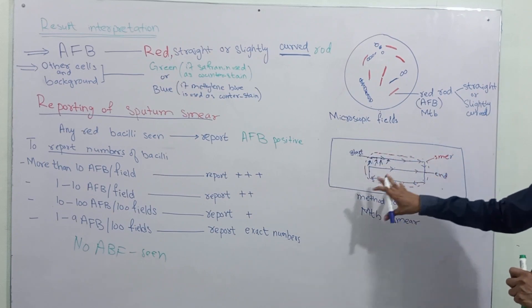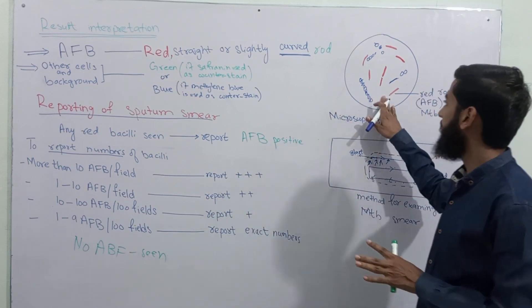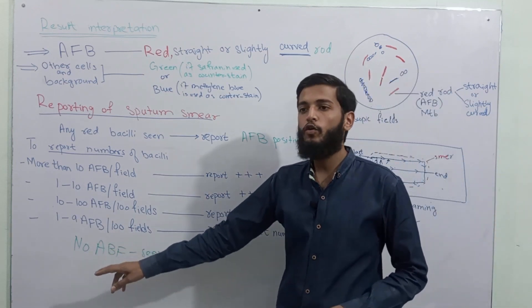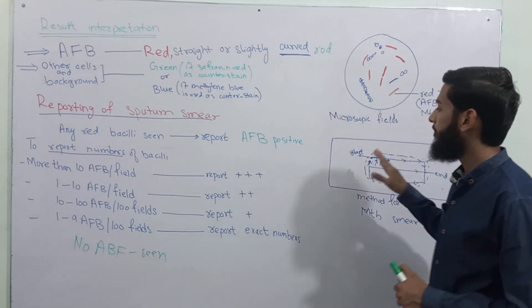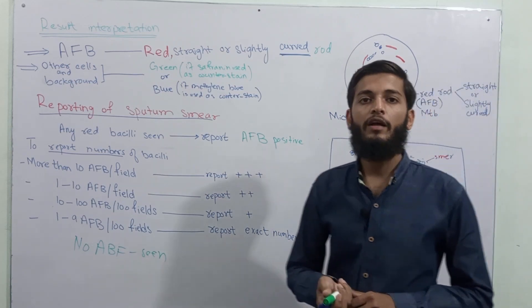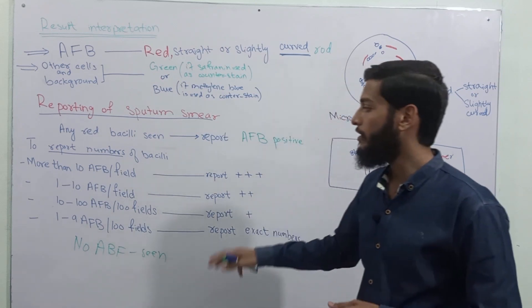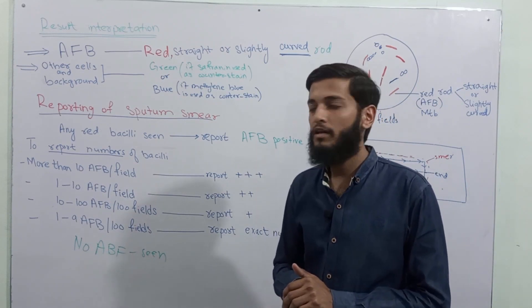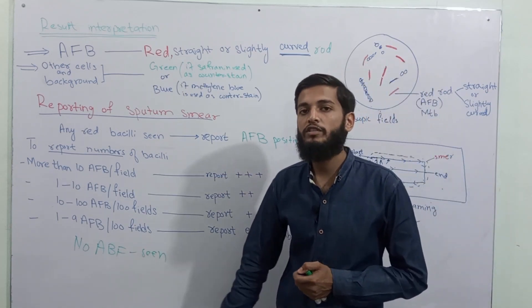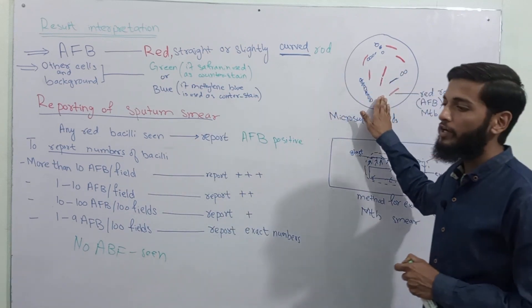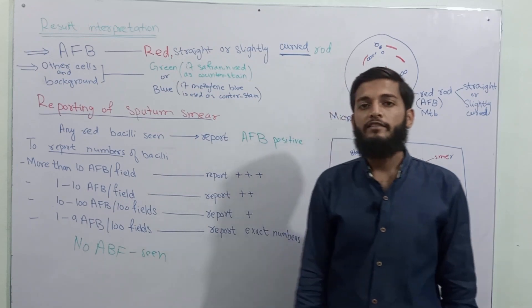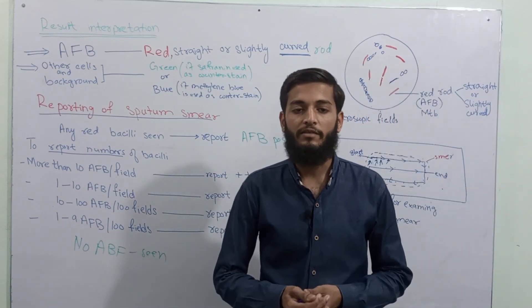If in all 100 fields only 1 to 9 red rod-shaped bacilli are seen, we report the exact number of the bacilli. But if we see only 1 or 2 acid fast bacilli per 100 fields — meaning we examined 100 fields and saw only 1 or 2 red rod-shaped bacilli — we ask the patient to submit the sample again, as we may have contaminated it, to avoid giving a false positive result. If we don't see any red rod-shaped bacilli in the sample, we write on the report: 'No AFB seen.' We do not write negative. If you have any questions, you can ask in the comment section. Thank you.